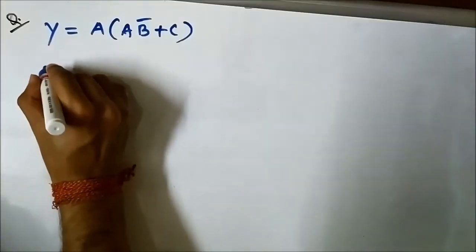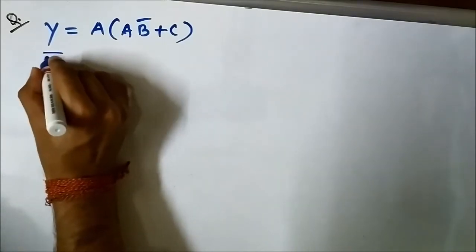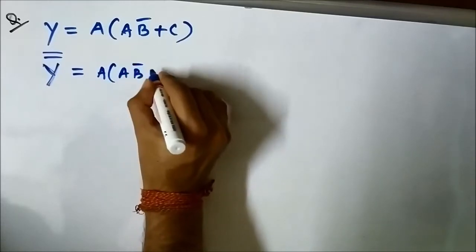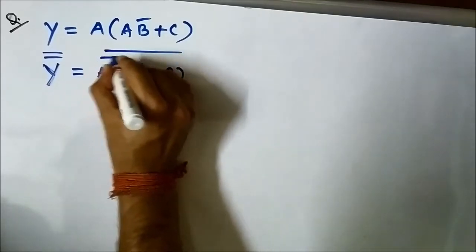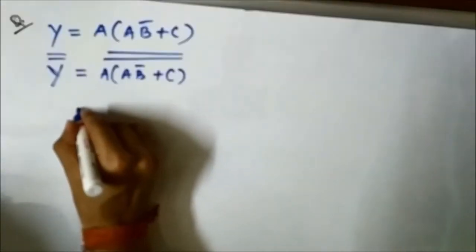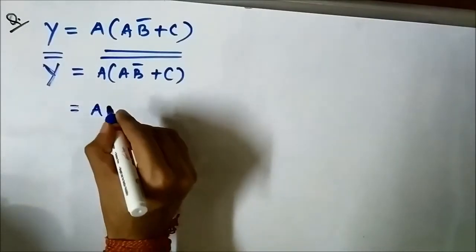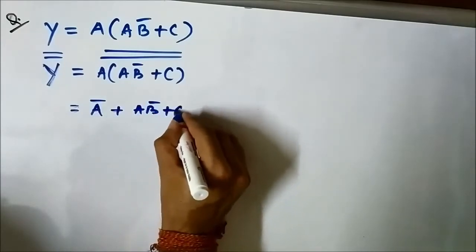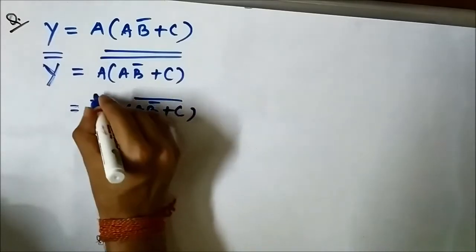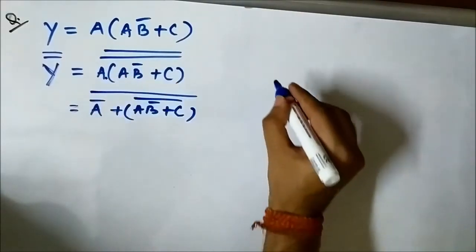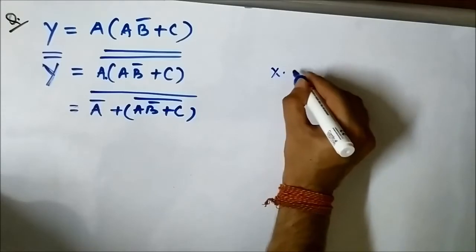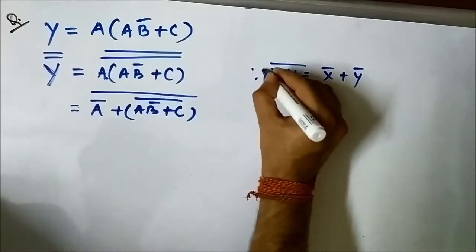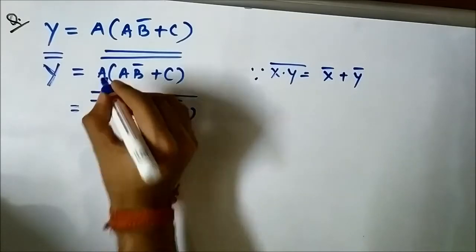For that we will use the double complement rule. We will take the double complement of the above Boolean expression, which is A·AB complement or C, double complement. Now it will become A complement or AB complement or C, whole complement. We converted this AND into OR using the rule: X and Y whole complement is X complement OR Y complement — the first De Morgan's law — to convert this AND into OR.